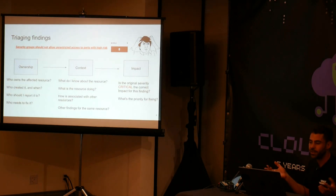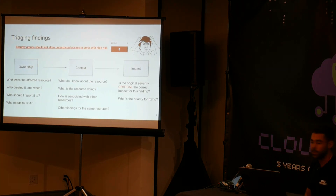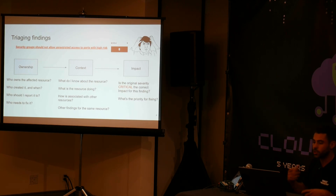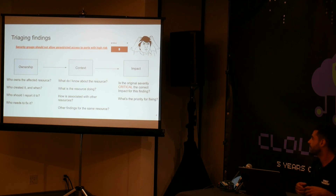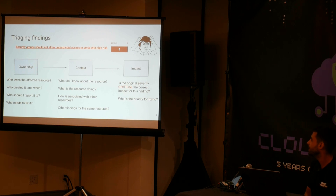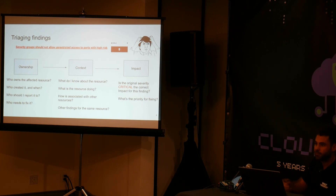When there's a security finding — like this one about an open security group — we first need to understand who owns the affected resource, so we know who to report it to and who created it. Then we need to understand the context: what it's doing, how it's associated with other resources, if there are other security findings for the same resource. And finally, with all that information, we can define the real impact of the finding. For example, if the security group is not attached or is not even in use, why would we report it as a critical finding?